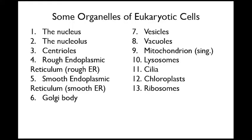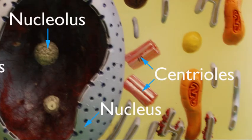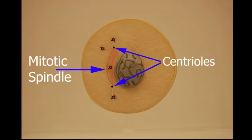Some organelles in eukaryotic cells: the nucleus contains spiral DNA and it controls cellular activities. The nucleus produces ribosomes in the nucleolus. Centrioles, located in the centrosome of an animal cell, form the spindles for facilitating nuclear division. They are absent from plant cells.